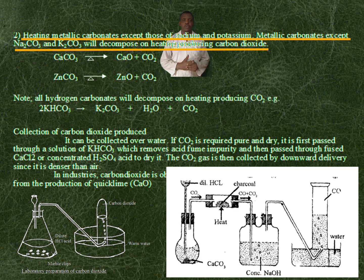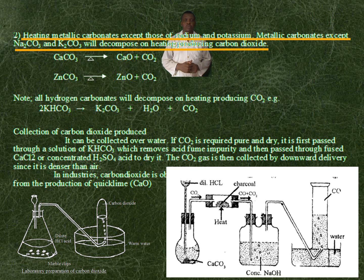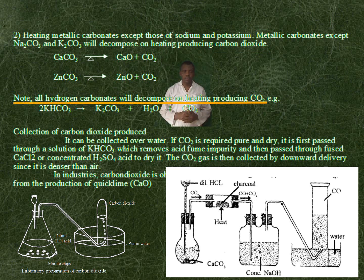Another method of producing carbon dioxide is by heating metallic carbonates, except those of sodium and potassium. Metallic carbonates — except sodium carbonate and potassium carbonate — will decompose on heating, producing carbon dioxide. Note: all hydrogen carbonates will also decompose on heating, producing carbon dioxide.